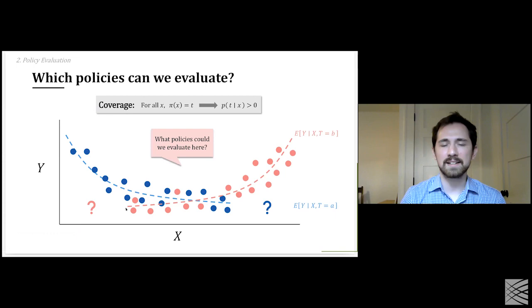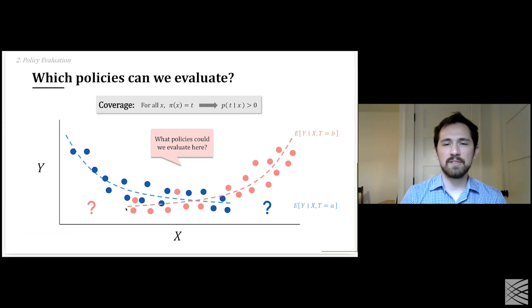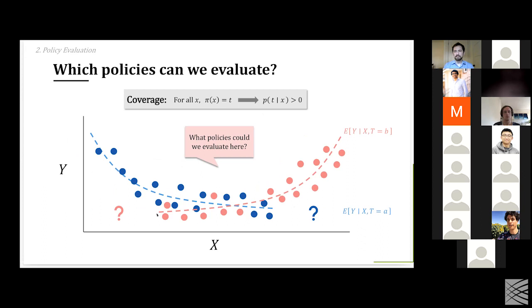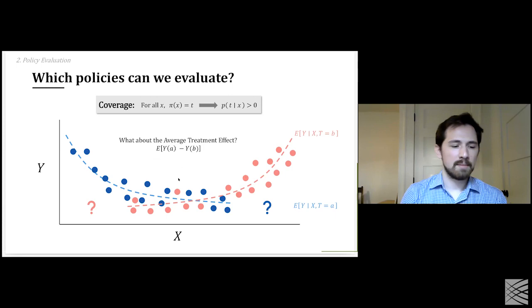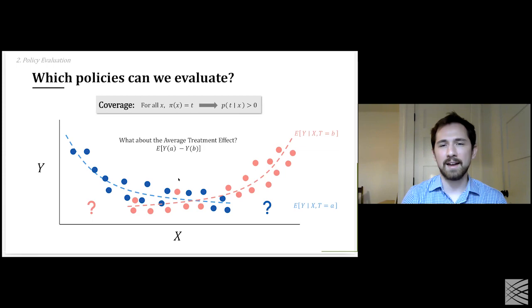An example of a simple policy that satisfies the coverage condition: picking a threshold. If I set a threshold in the middle and say give treatment A below it and treatment B above it, the coverage condition holds because I'm not prescribing treatment B where there's no data for it, and similarly for treatment A.